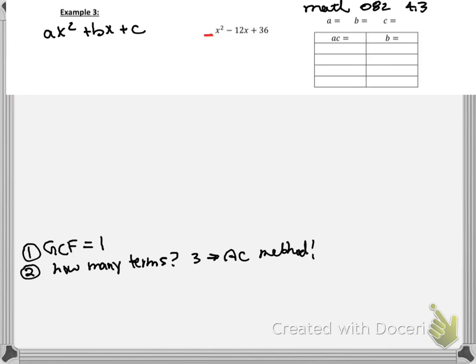So you ask yourself, well, how many x squareds do I see? Well, I see 1x squared. So that looks weird. There we go. Okay, so my A is 1.